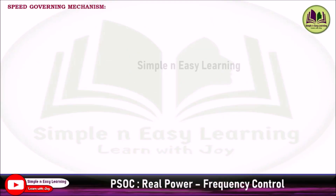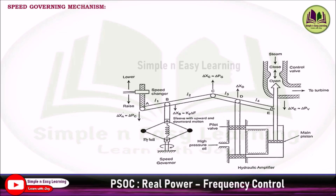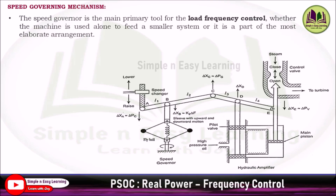This is a complete structure of the speed governing mechanism. The speed governor is the main primary tool for load frequency control, whether the machine is used alone to feed a smaller system or it is part of a more elaborate arrangement. As the load varies, the speed changes, and since speed is directly proportional to frequency, the frequency gets affected. This load frequency control is much needed in power system operation and control.